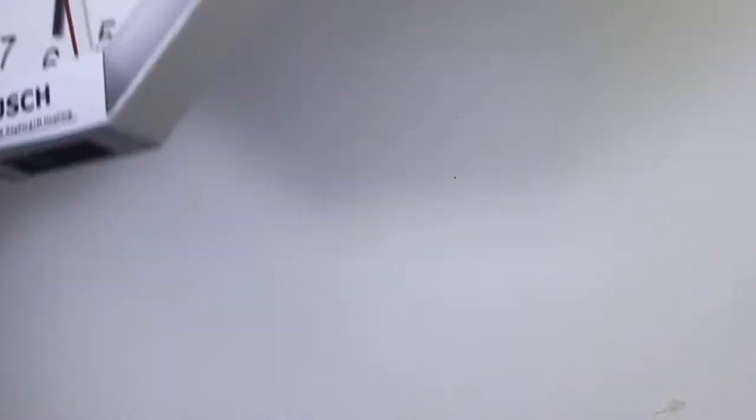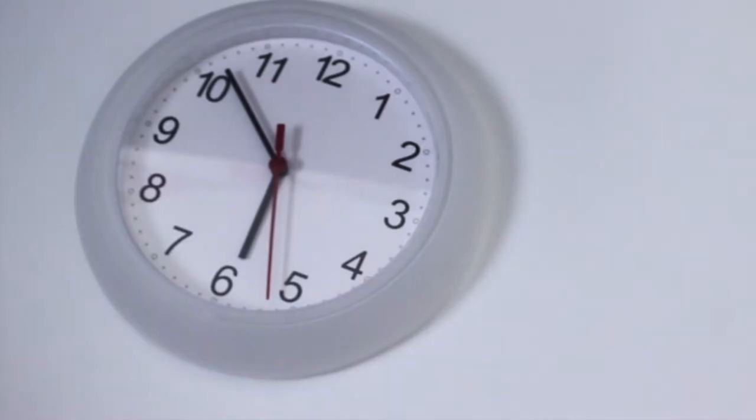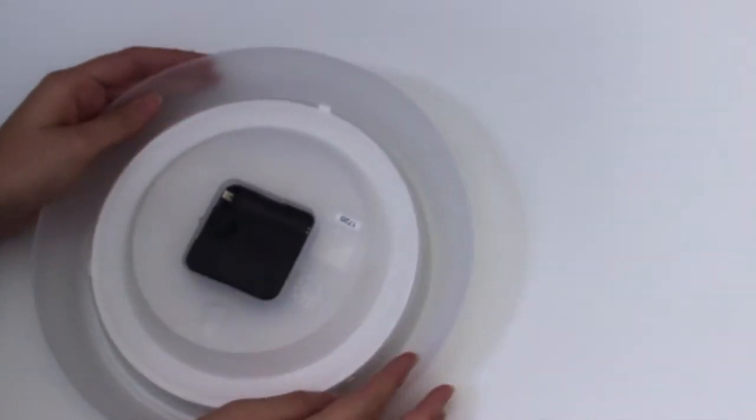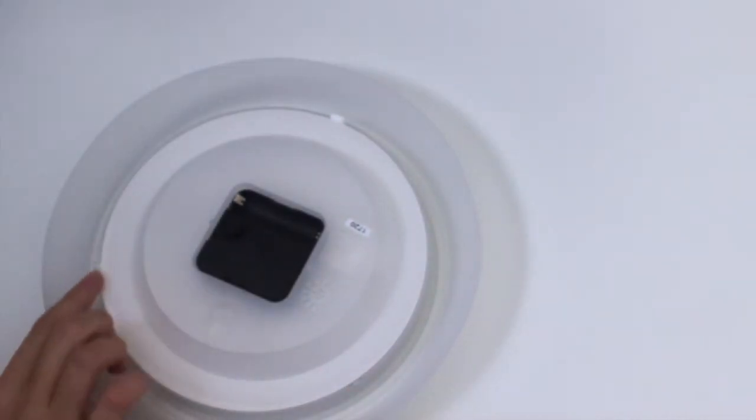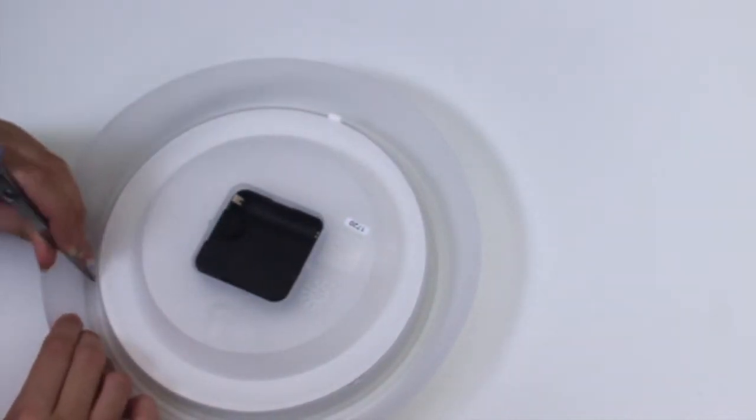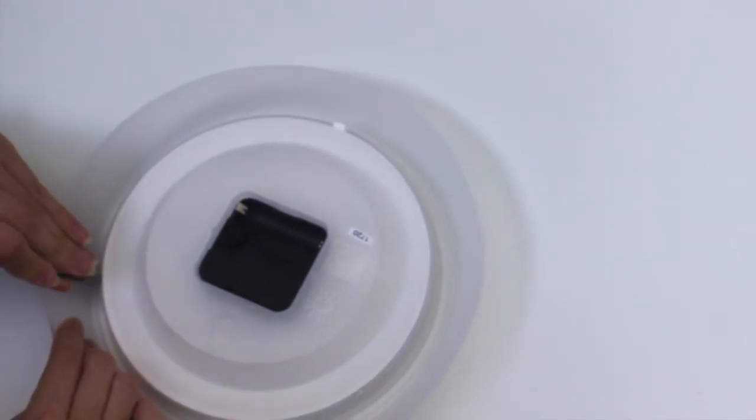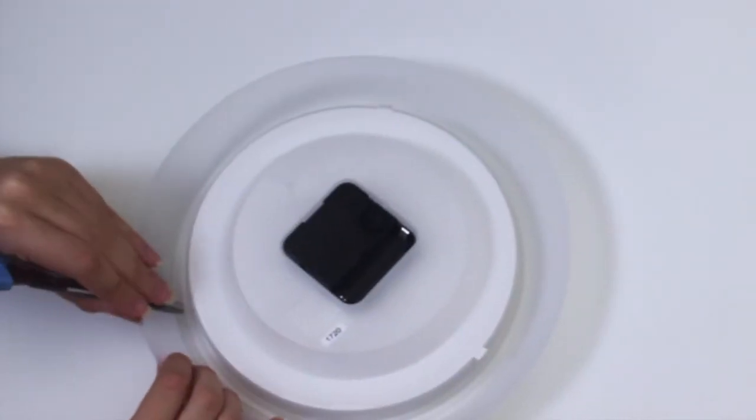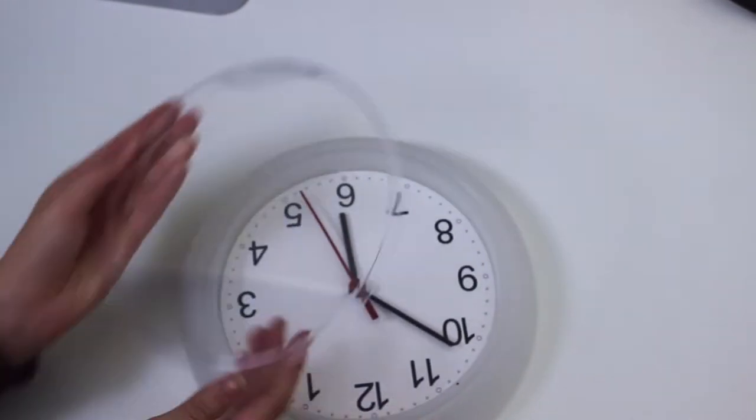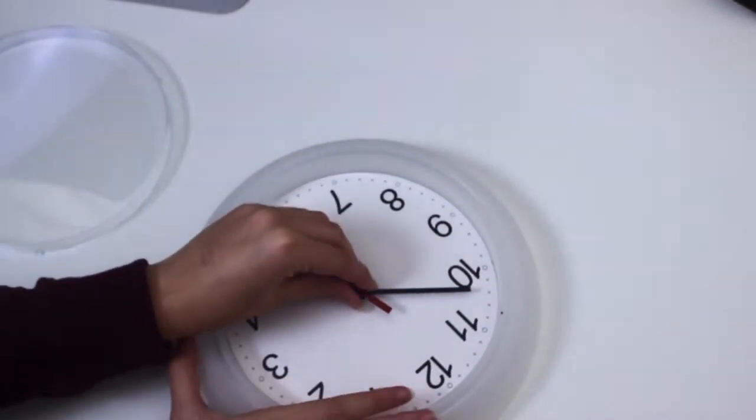So to start off, you obviously want to take your clock out of its packaging. Once you've done that, we now need to remove the glass. To do this, you need to turn it upside down and you'll be able to see three little tabs sticking out. You'll need to use something which you can then use to push these tabs in. You kind of want to push it inwards and upwards. This will then allow you to easily remove the glass.